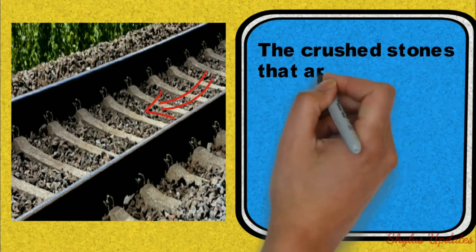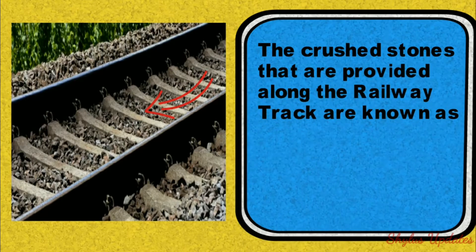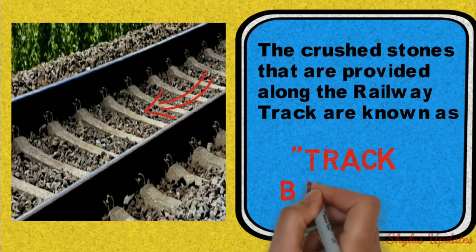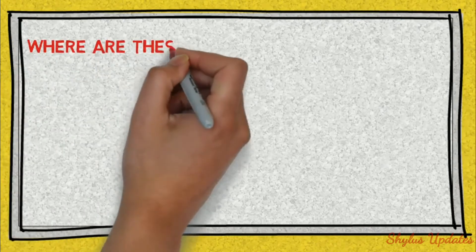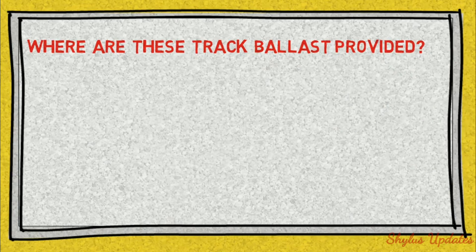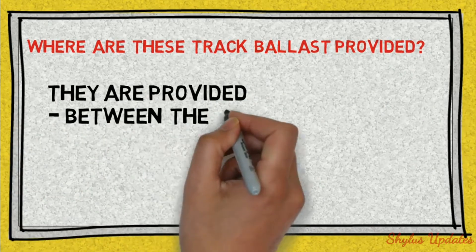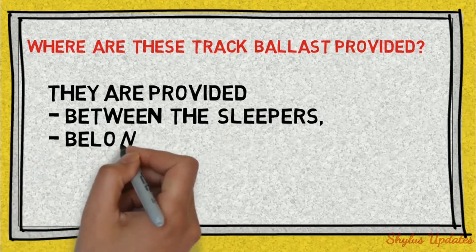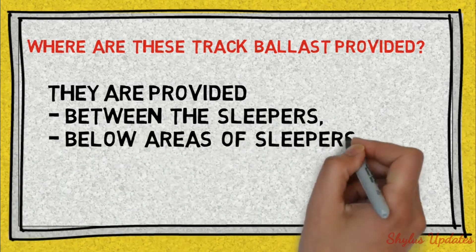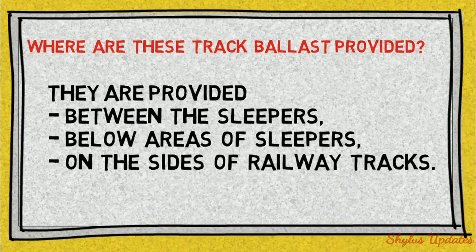The stones that are provided along the railway track are known as track ballast. These track ballasts are provided between the sleepers, below the areas of sleepers, and also on the sides of railway tracks.